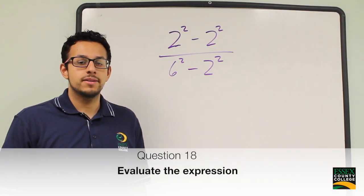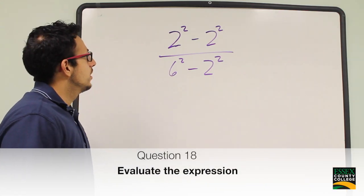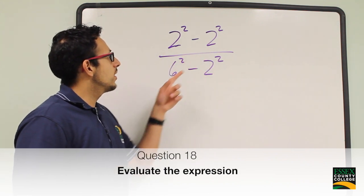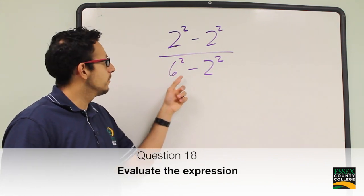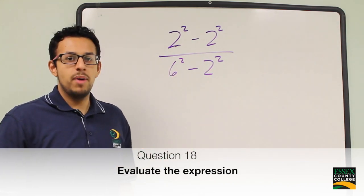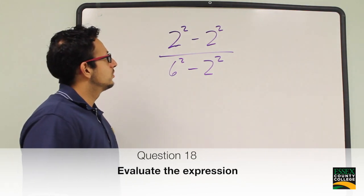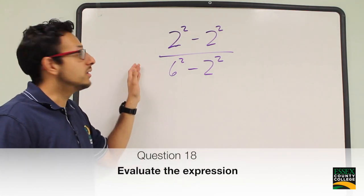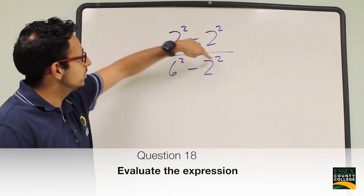The problem states: evaluate the expression 2 squared minus 2 squared over 6 squared minus 2 squared, if possible. We're going to take care of all the exponents first.